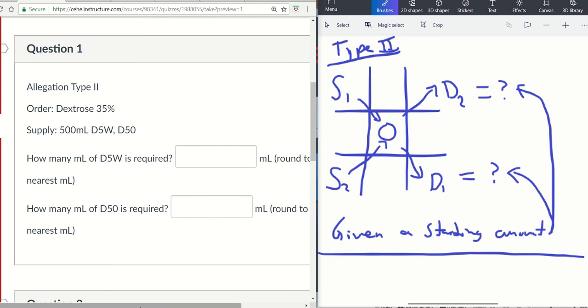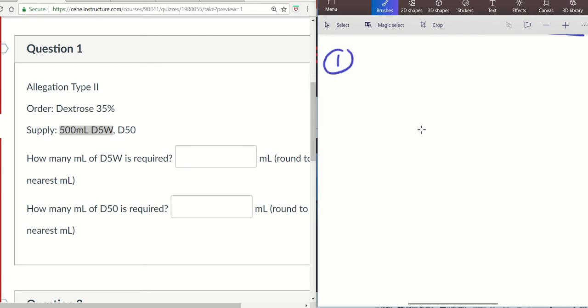So Type 2 Allegation. How do you know it's Type 2 Allegation? You are given a starting amount. In the supply we are starting with 500 mLs and then we're going to add D50 to make it 35%. So Type 2 starts the same exact way. Here our order is 35, and our supplies are 50 and 5. Just the same as Type 1, we'll find the difference here. This is 15. Find the difference here—it is 30.